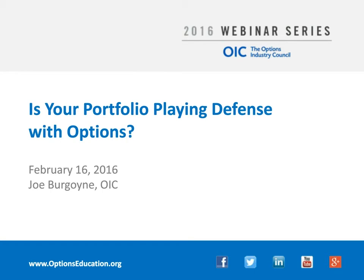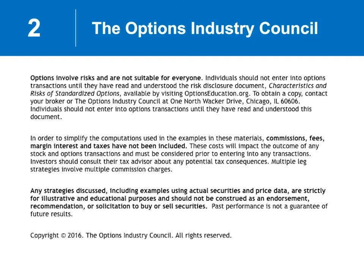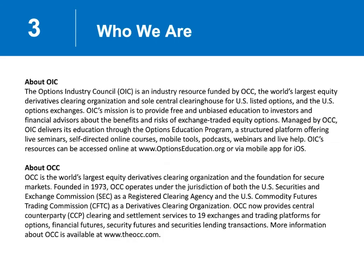Options — one of the great things about options is the versatility. As we go along here, we'll go through half a dozen plus different types of strategies, some straightforward. We're going to talk about just buying puts, but then we're going to talk about other things as well. For those of you just getting started, please be aware that the industry does put out a document called 'Characteristics and Risks of Standardized Options.' It's important that you get a copy of that either from the Clearing Corporation, OCC, or from your broker.